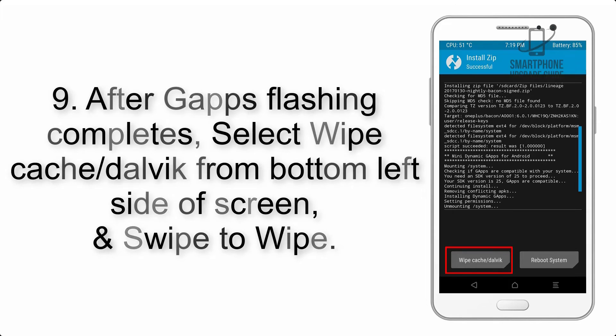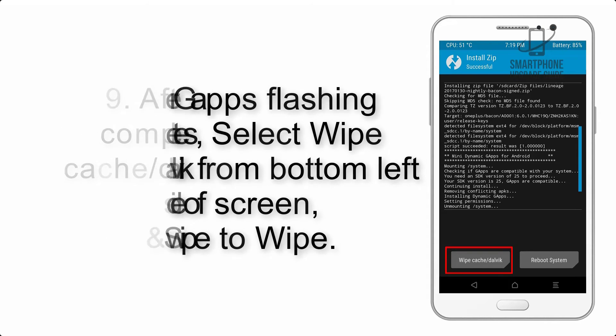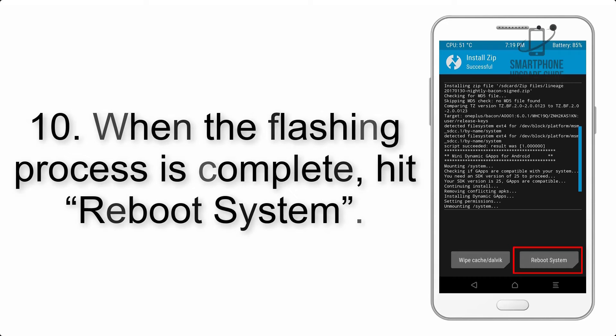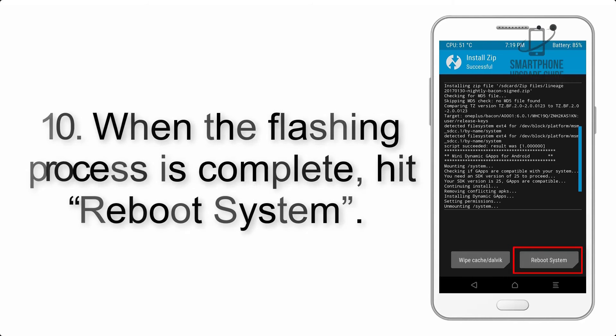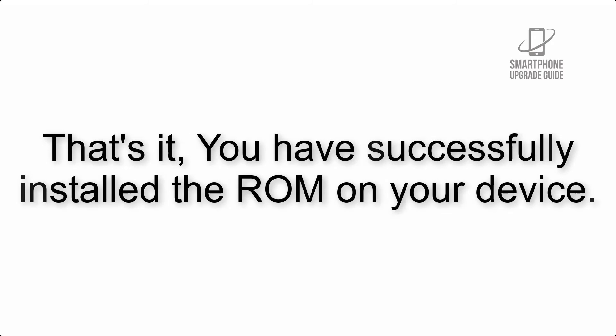Step 9: After GApps flashing completes, select Wipe Cache and Dalvik from the bottom left side of the screen and swipe to wipe. Step 10: When the flashing process is complete, hit Reboot System. That's it — you have successfully installed the ROM on your device.